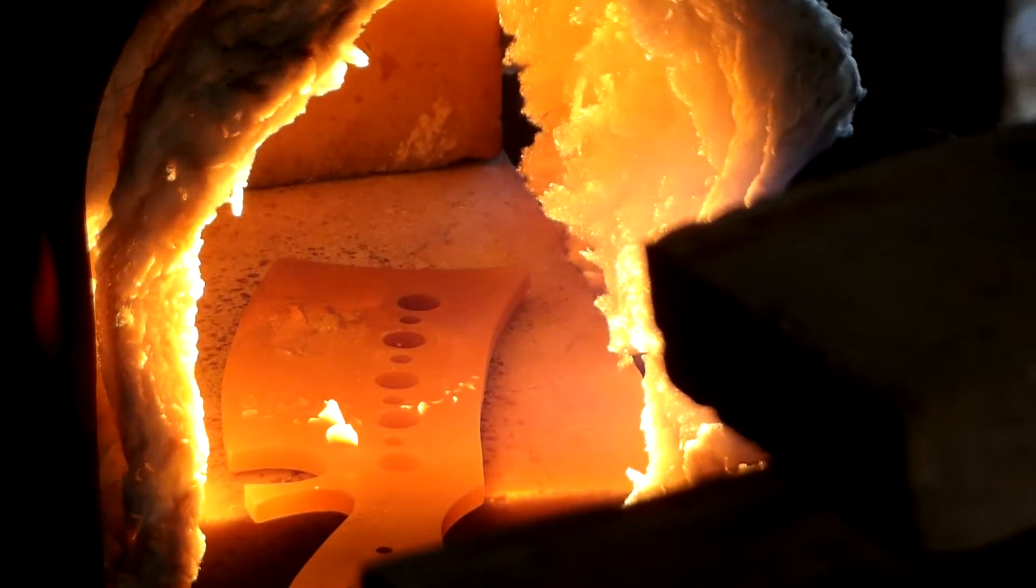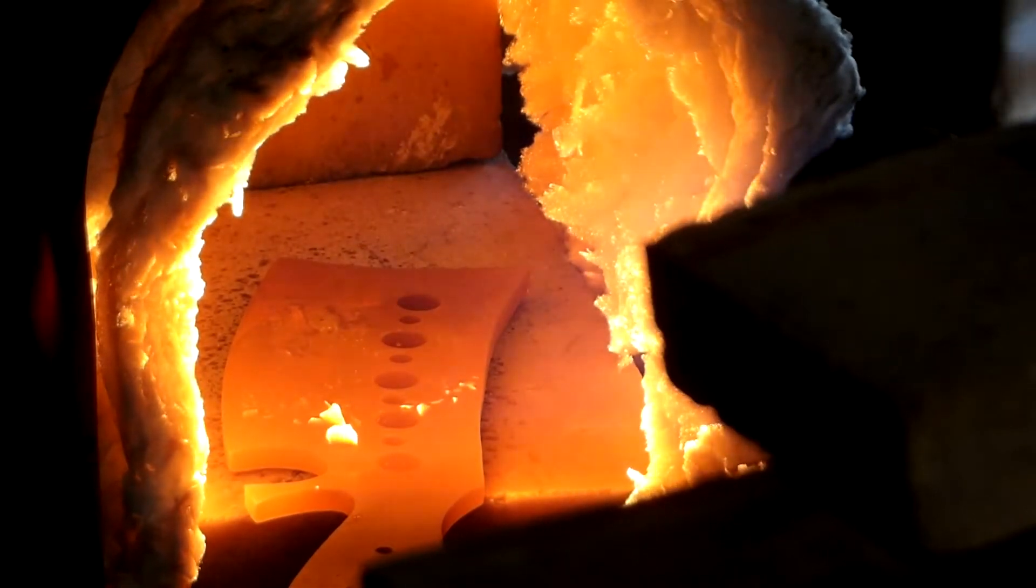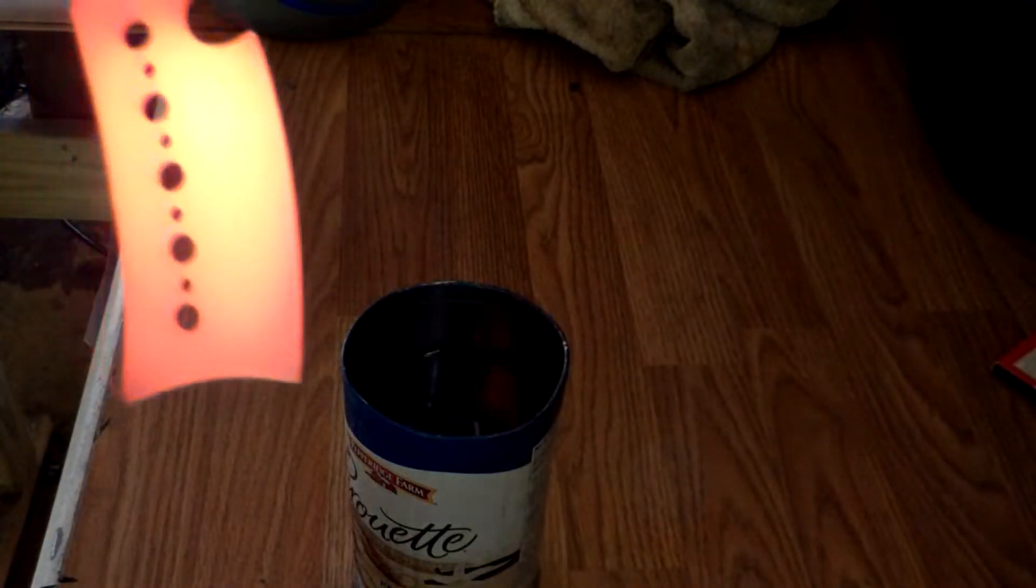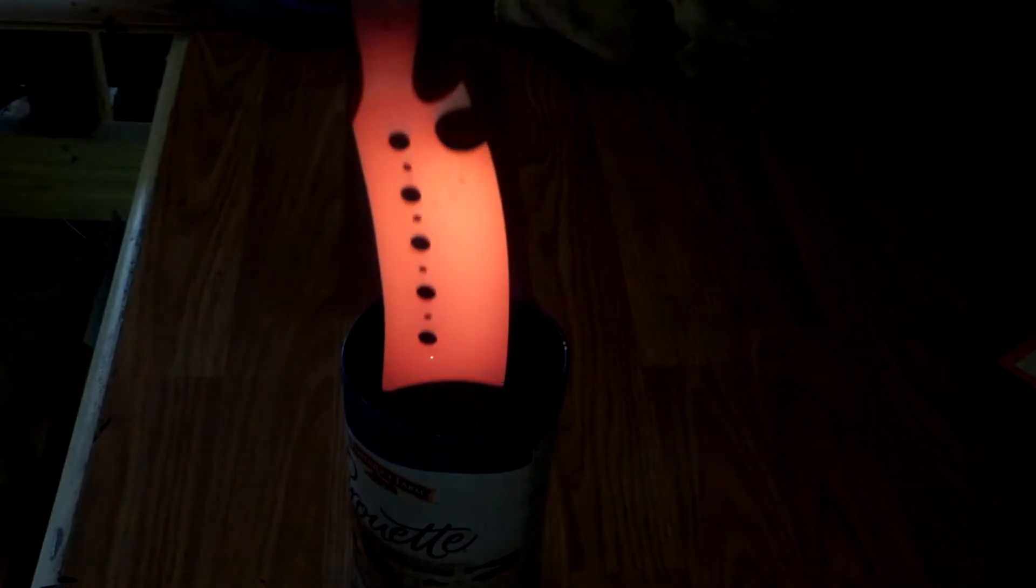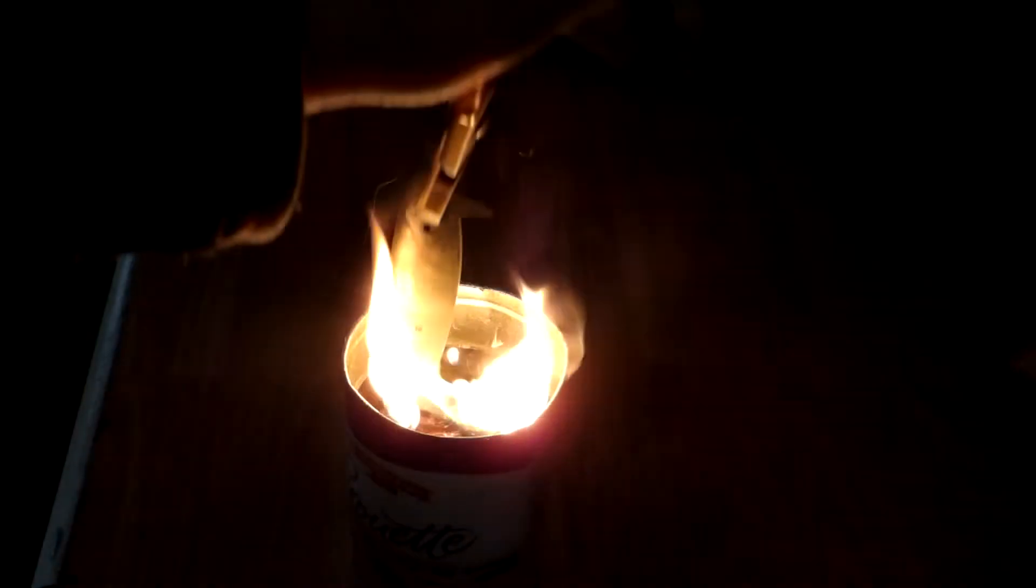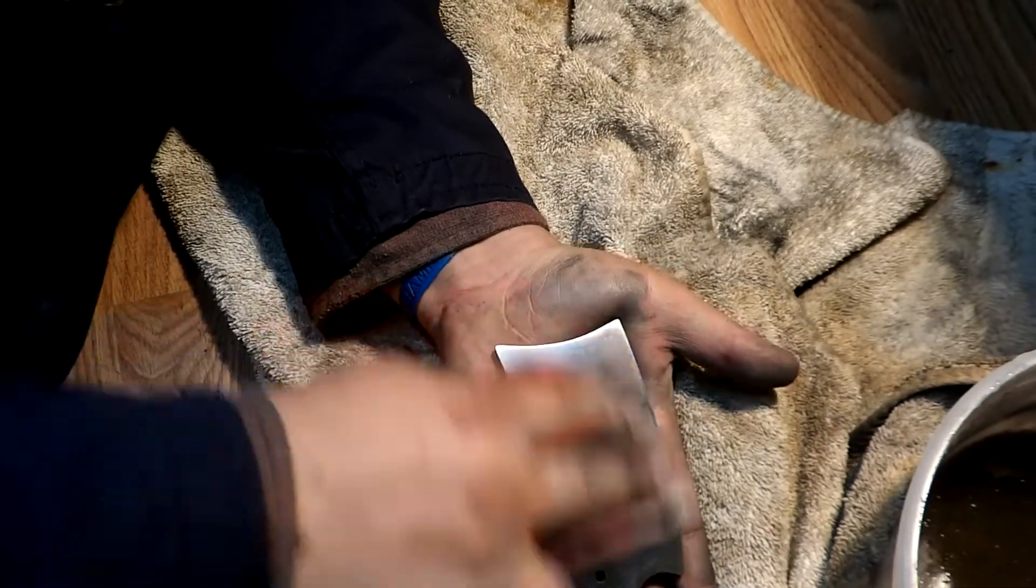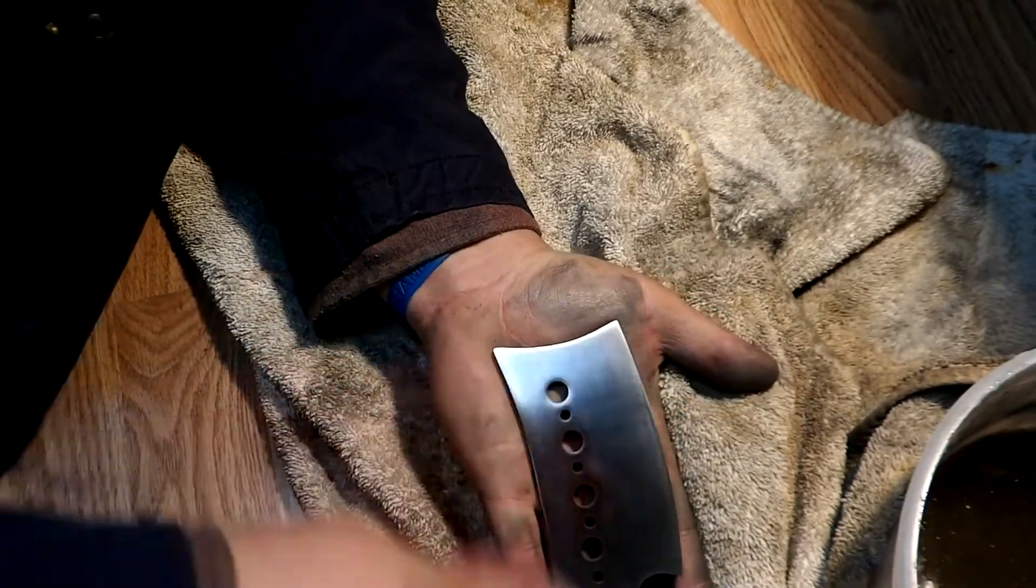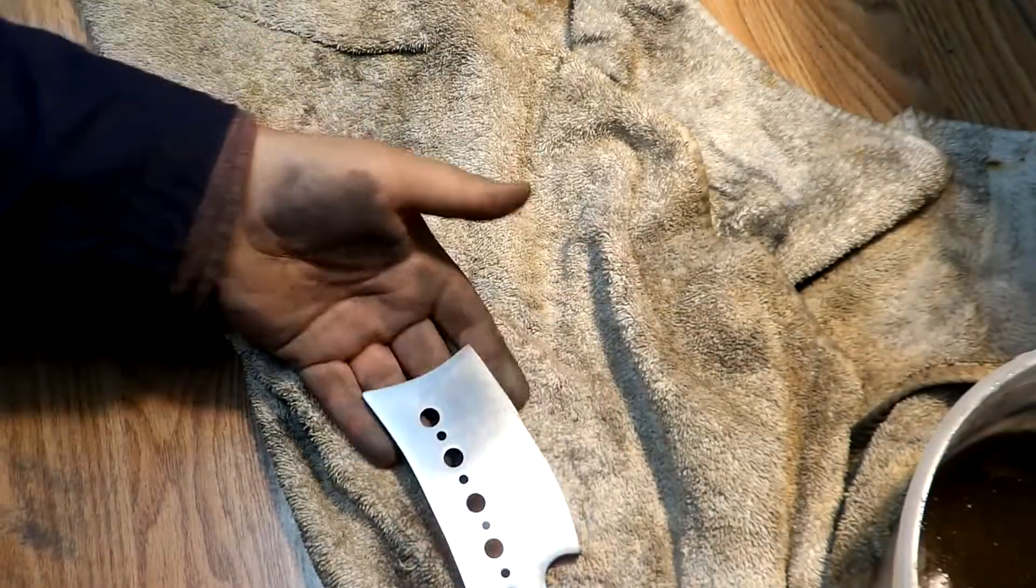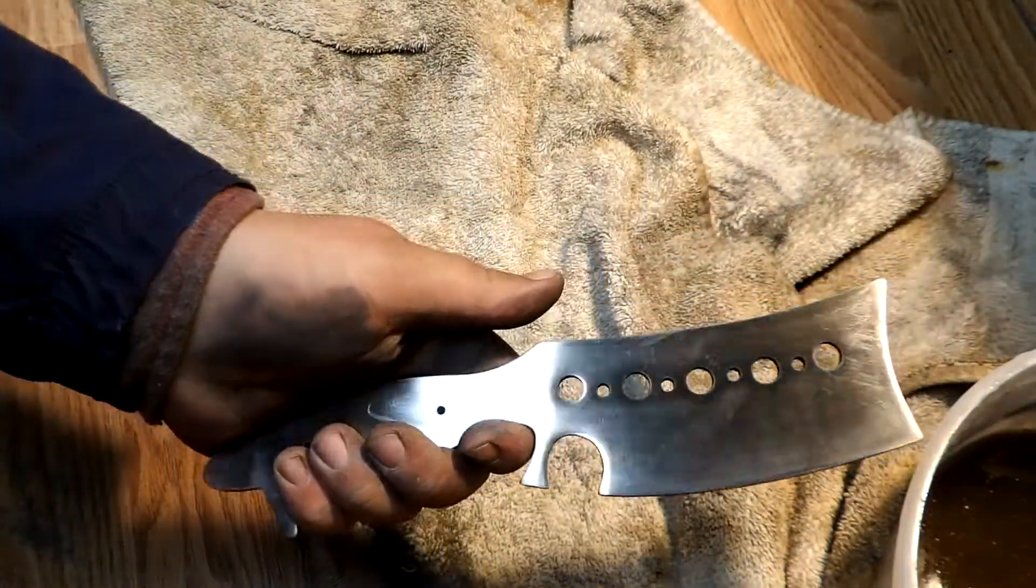Right here guys, I'm heating up the steel and I'm getting ready to quench it. I'm getting ready to dip it in cold oil and it's going to cool it down very, very fast. What that does is it makes soft metal hard, and that allows your knife to hold a good edge.